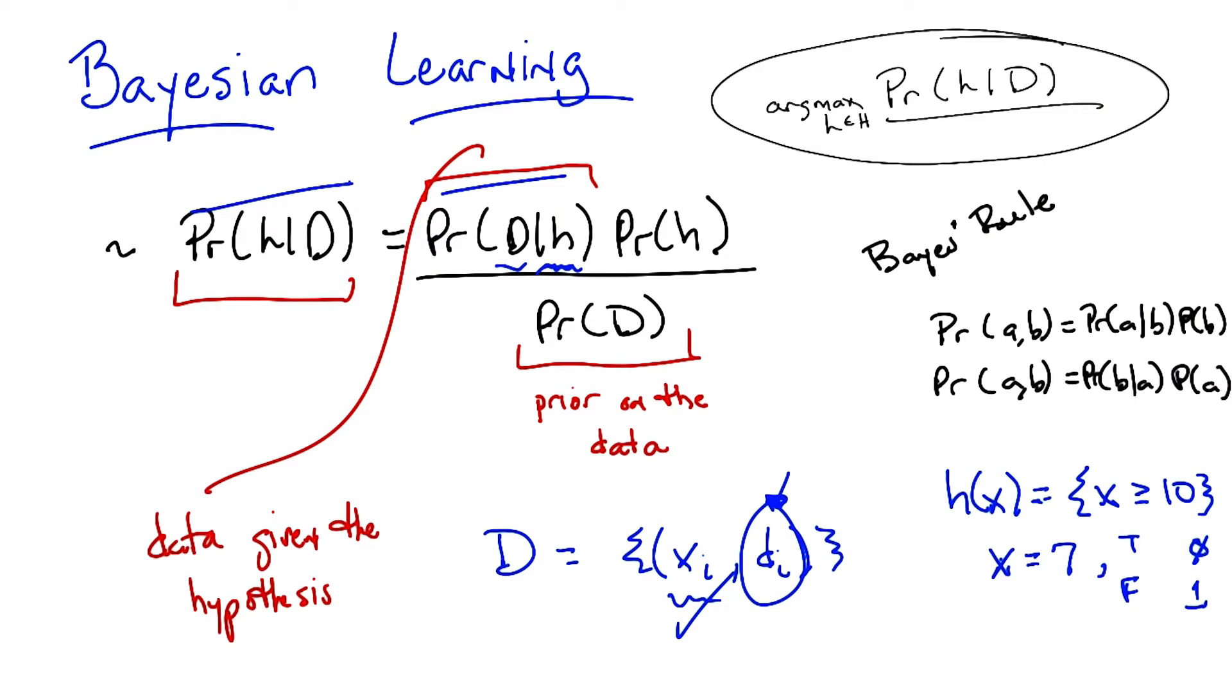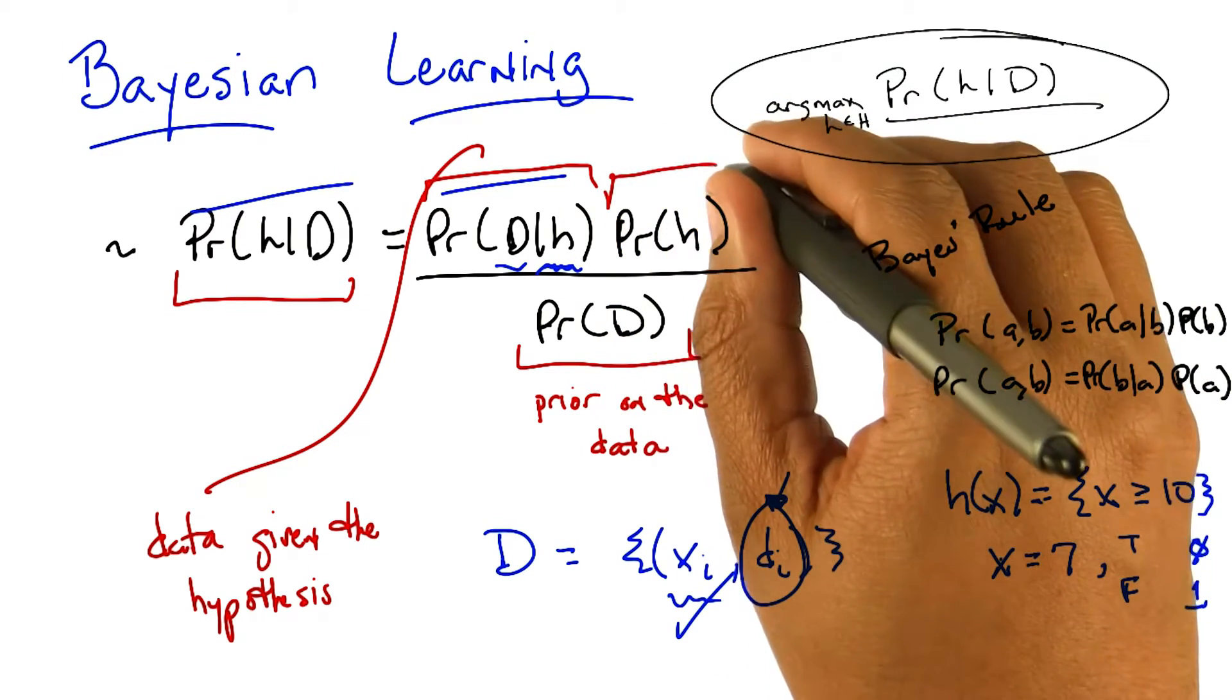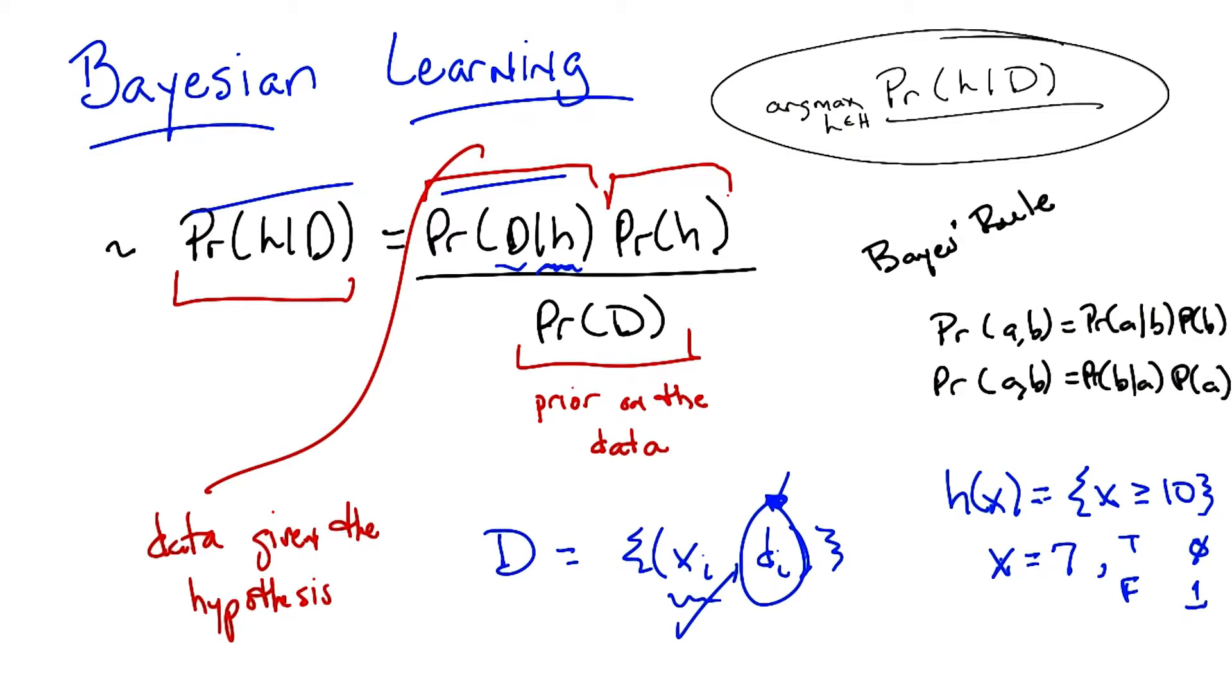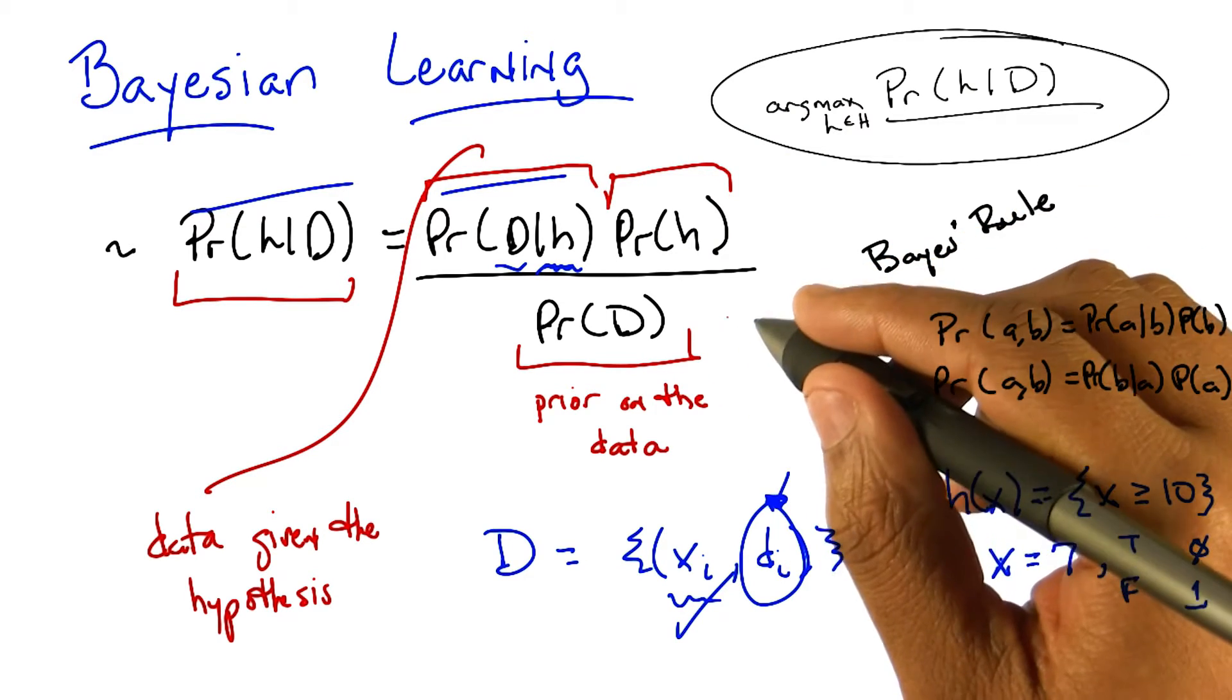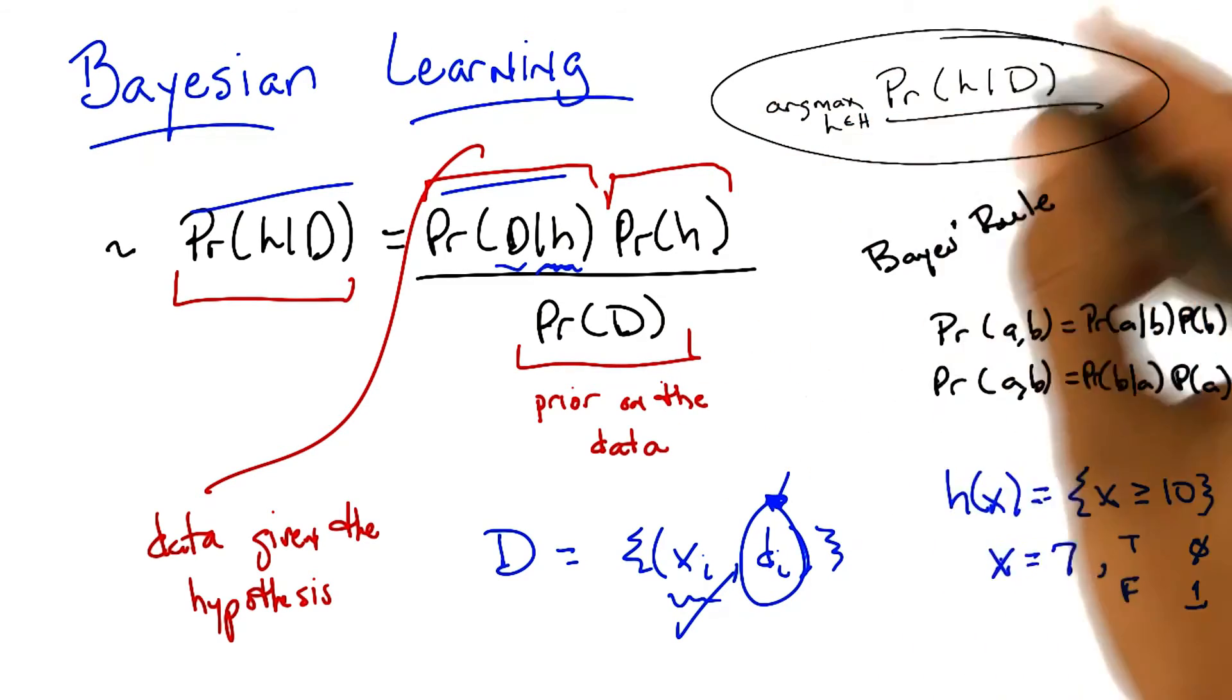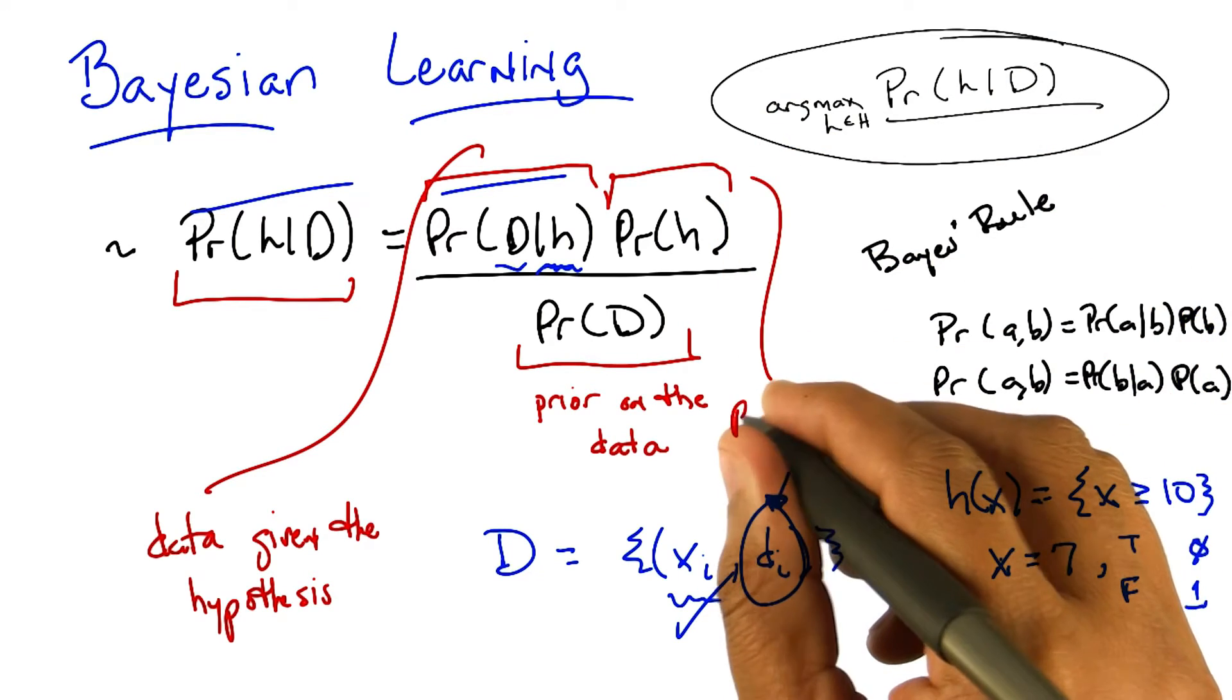So let's look at the last quantity we haven't talked about so far. And that is the probability of the hypothesis. Well, just like the probability of D is the prior on the data, this is in fact your prior on the hypothesis.